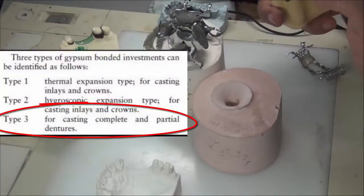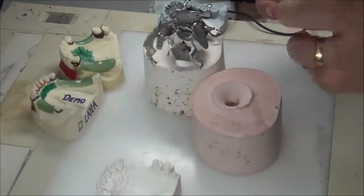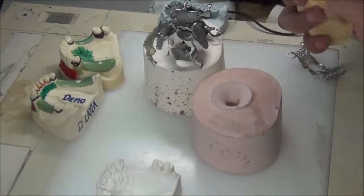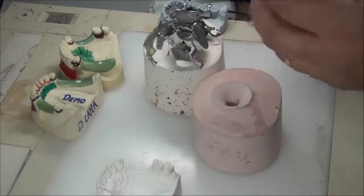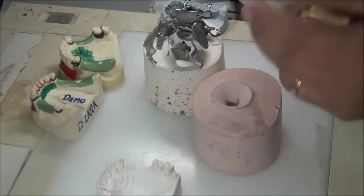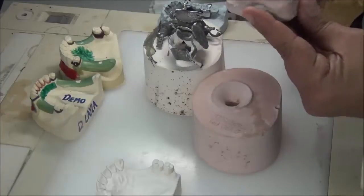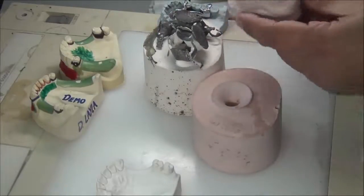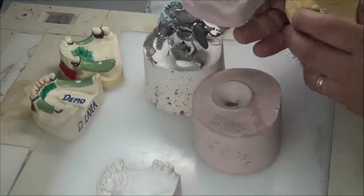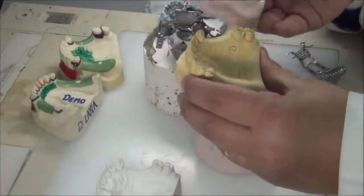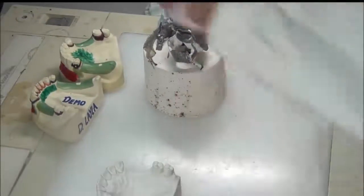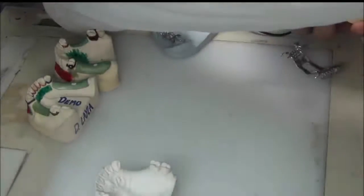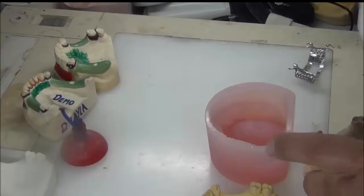Refractory cast material is a specific type of gypsum — not regular gypsum — with some binder between the gypsum particles. This cast has very low abrasion resistance: it is very weak and fragile. We strengthen it with beeswax and then add our wax patterns. To convert the secondary cast into a refractory cast, I do a process called duplication before putting in the wax for the metal.